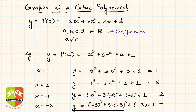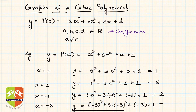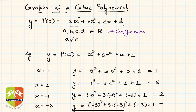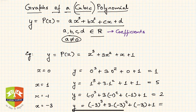Hello friends, welcome to another session on polynomials. We were discussing graphs of different types of polynomials, and today we are going to take up graphs of cubic polynomials and see in our graphing tool GeoGebra how a cubic polynomial behaves if we change the values of the coefficients. The cubic polynomial is given as ax³ + bx² + cx + d, a polynomial of degree 3. A, b, c, d belong to the set of real numbers, and a cannot be 0, because if a is 0 then the polynomial loses its identity of being a cubic polynomial.